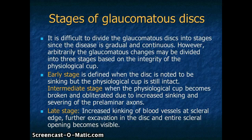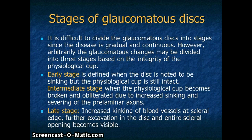Now I would like to talk about the stages of the glaucomatous disc. It is difficult to divide the glaucomatous disc into stages since the disease is gradual and continuous. However, arbitrarily, the glaucomatous disc may be divided into three stages depending on the integrity of the physiological cup. The early stage is defined when the optic disc is noted to be sinking while the physiological cup is still intact. The intermediate stage is defined when the physiological cup becomes broken and indistinguishable as excavation increases due to progressive severing of nerve fibers. The late glaucomatous stage shows increased kinking of the blood vessels at the circular edge, further excavation of the optic disc, and the entire circular opening becomes visible.